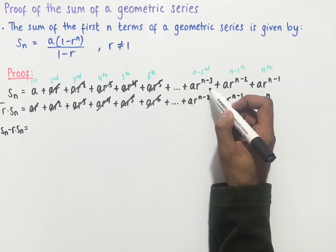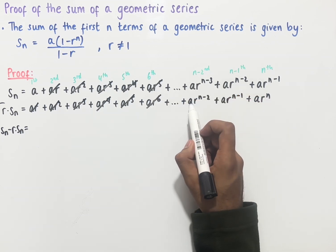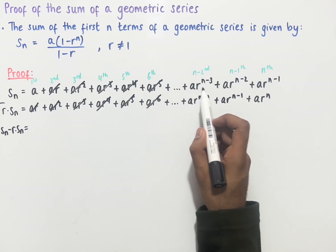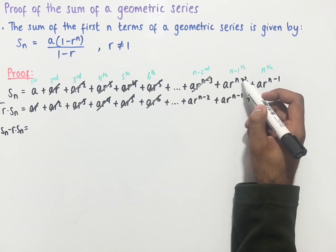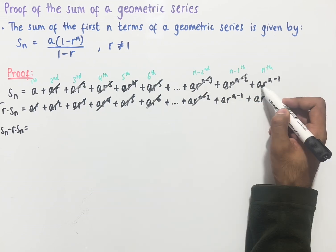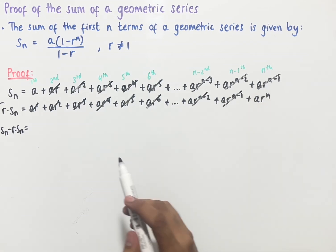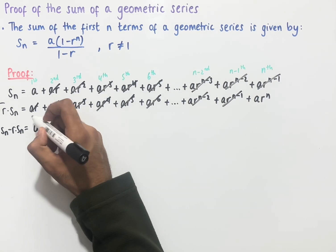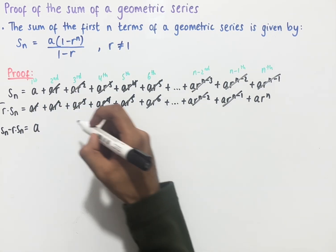We see that ar to the power of n minus 3 — there would be a term before this one that would be ar to the power of n minus 3, and so that would cancel. Ar to the power of n minus 2 cancels with this term, ar to the power of n minus 1 cancels with this term. So finally we are left with a minus ar to the power of n.